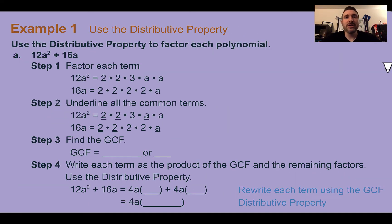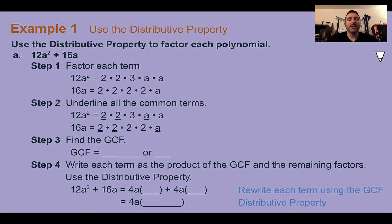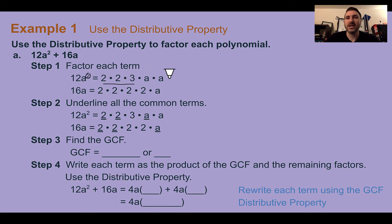Example 1: use the distributive property to factor each polynomial. We have 12a squared plus 16a. They're breaking it down into four steps. First, find the factors of each term. So 12a squared is really 2 times 2 times 3 — that's your prime factorization — and there are two a's, so a times a. 16a is 2 times 2 times 2 times 2, then times a.